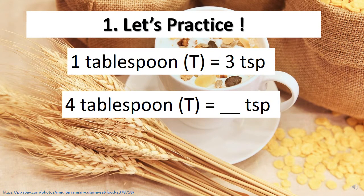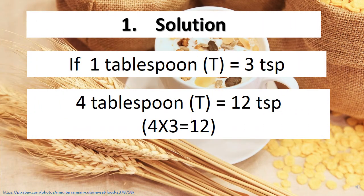Let's practice. If 1 tablespoon is equal to 3 teaspoons, then how many teaspoons is 4 tablespoons? Solution: If 1 tablespoon equals 3 teaspoons, then 4 tablespoons equals 12 teaspoons. You just multiply 4 by 3, which equals 12.